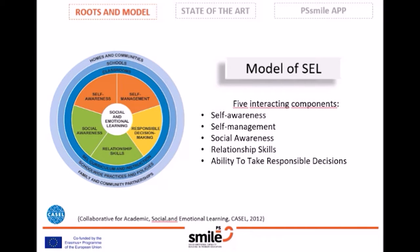Within the most well-known model of SEL, skills are organized as five interactive components: self-awareness — the ability to understand one's own emotions, personal goals and values; self-management — the ability to regulate affect and calm oneself down; social awareness — the ability to understand others and take the perspective of those with different backgrounds and cultures, and to act with empathy and compassion; relationship skills — the ability to communicate clearly, to negotiate and to seek help when needed; and the ability to take responsible decisions.